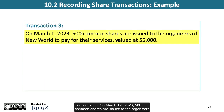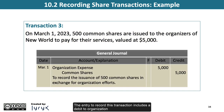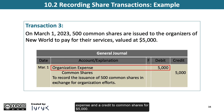Transaction 3. On March 1, 2023, 500 common shares are issued to the organizers of New World to pay for their services, valued at $5,000. The entry to record this transaction includes a debit to organization expense and a credit to common shares for $5,000.